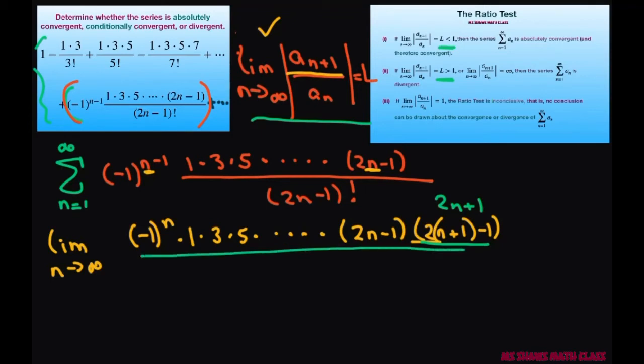Alright, in the denominator, we're going to get the same thing. This is going to end up being 2n plus 1 minus 1 factorial.